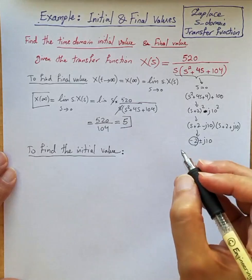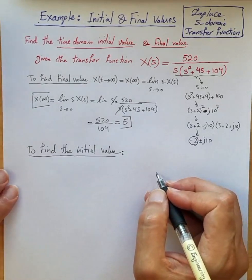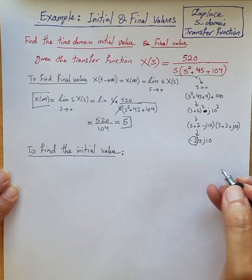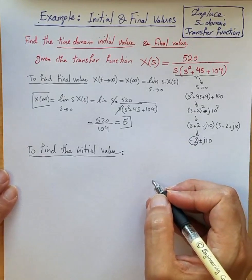And also at the same time, to avoid having any impulse at time 0, to avoid having a Dirac delta at time 0 for the time domain function...